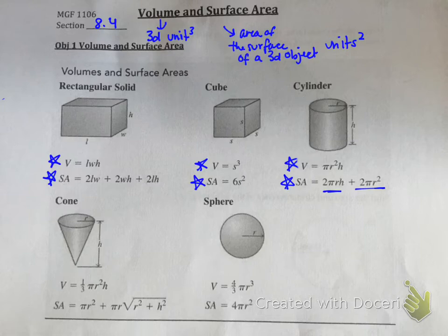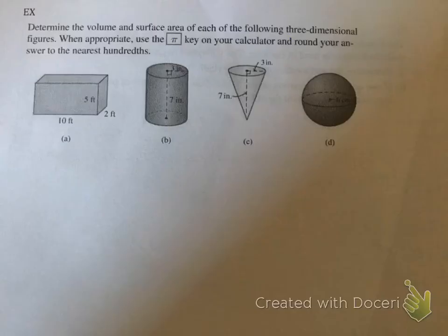Finally, the sphere. To find the volume of a sphere, it's four-thirds pi r cubed. To find the surface area of a sphere, it's four pi r squared. Now that we have all the formulas, let's go ahead and try a couple of problems.